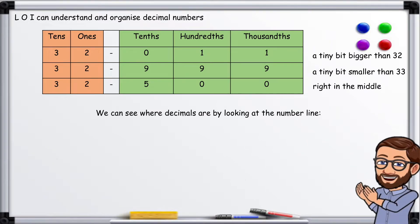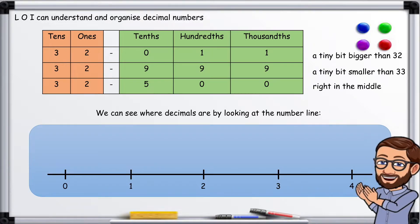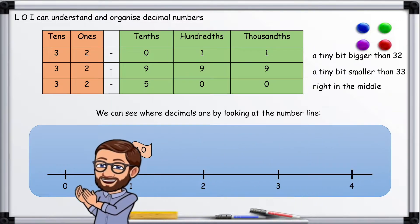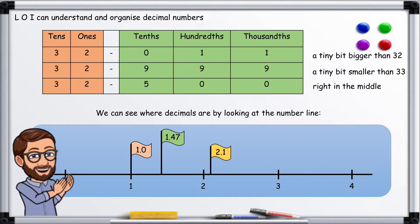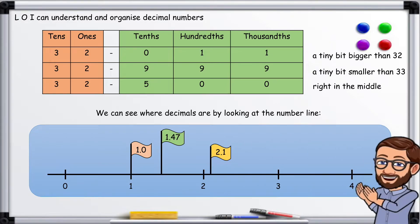We can see where decimals are by looking at the number line. Here's our number line. There's one — so that would be 1.47, quite nearly 1.5, very close to the middle. This is 2.1, so it's just after 2 — that would be 2 and one tenth. 2.5, or 2 and a half. And 2.9, or 2 and nine tenths — that's just before 3.